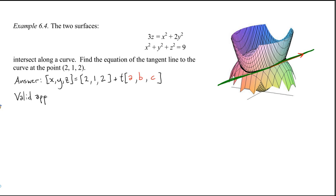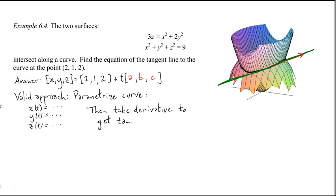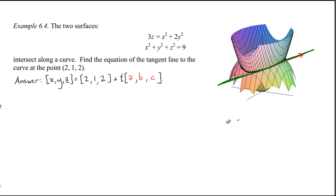So, a valid approach, something you could do in principle, would be to find a parametrization of the curve. You could do that. X of t, y of t, z of t. You write those down. And then, you'd work with those two equations. And then, you'd take the derivative to get the tangent vector. Now, that could work in principle. It gets a little messy. So, we're not going to do that. We're going to do something else.